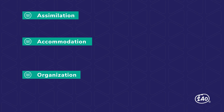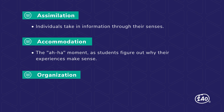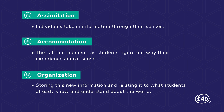Why is this important in science? Science involves discovery and investigation — students must do, not just read or listen. Students learn in three key phases: assimilation, accommodation, and organization. Assimilation means individuals take in information through their senses. Accommodation is that 'aha' moment, as students figure out why their experiences make sense. Organization means storing this new information and relating it to what students already know and understand about the world.